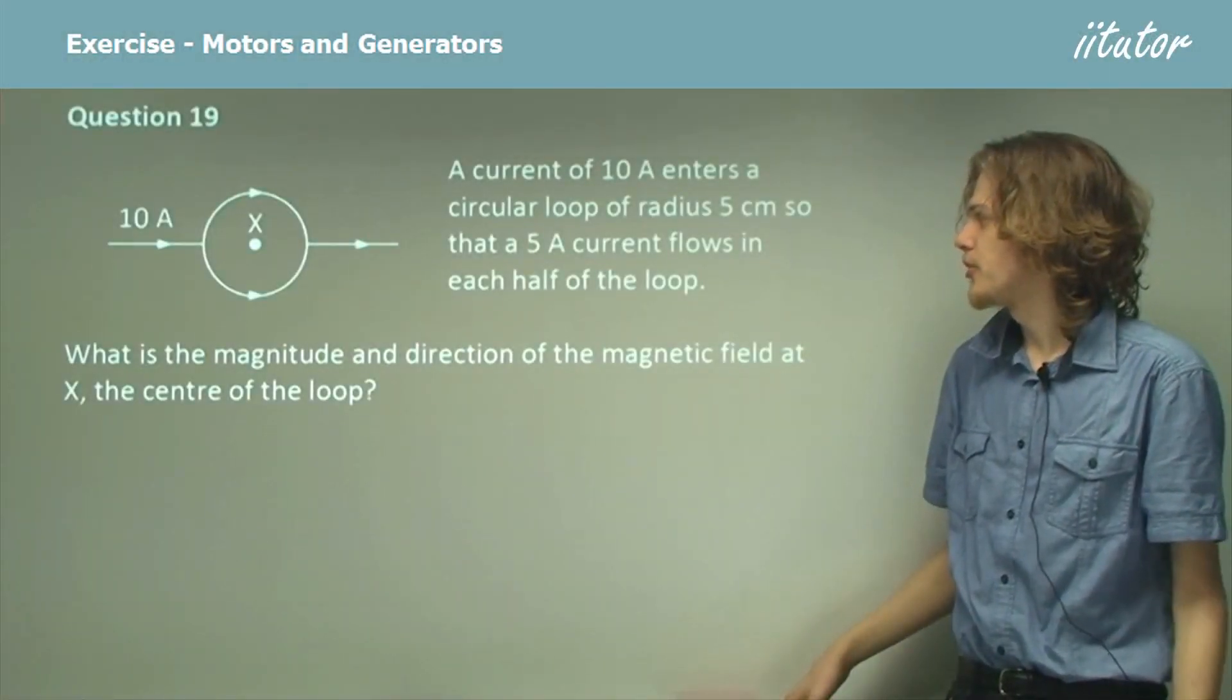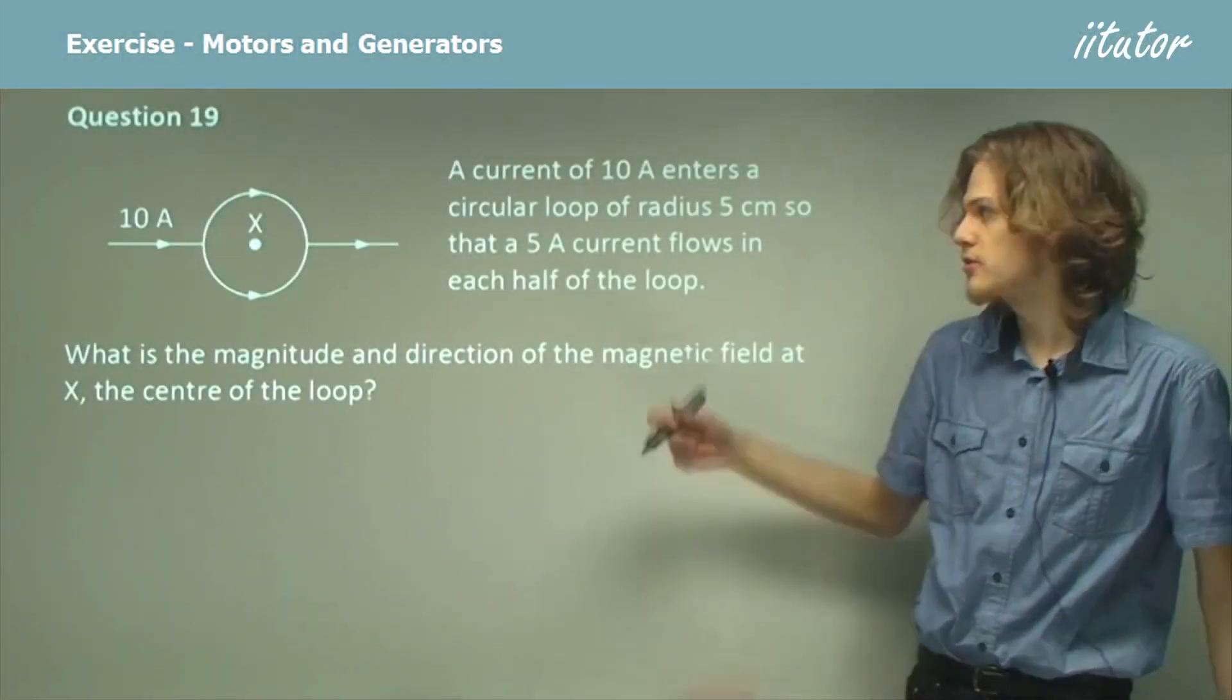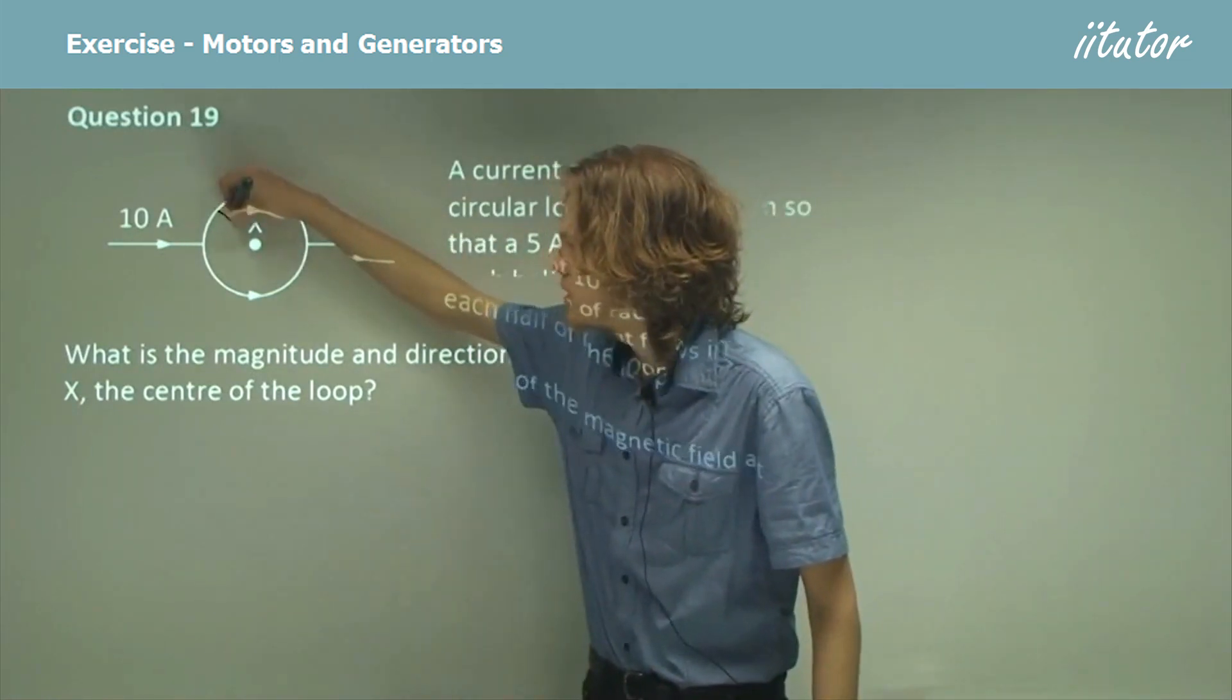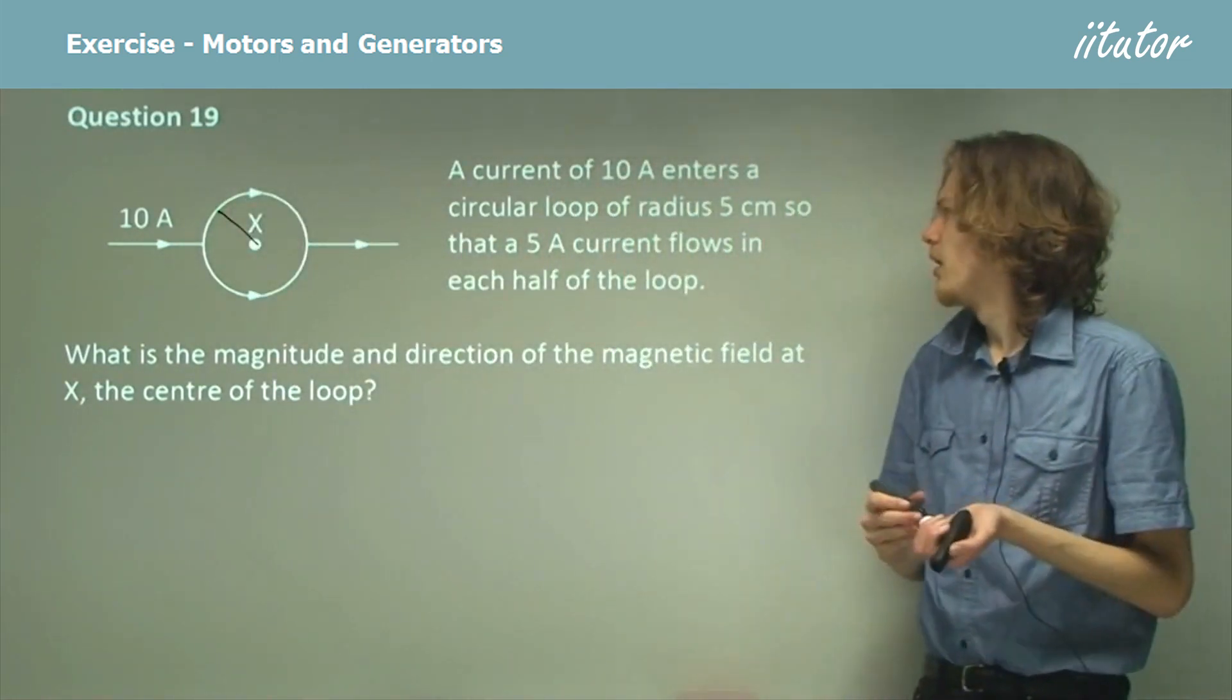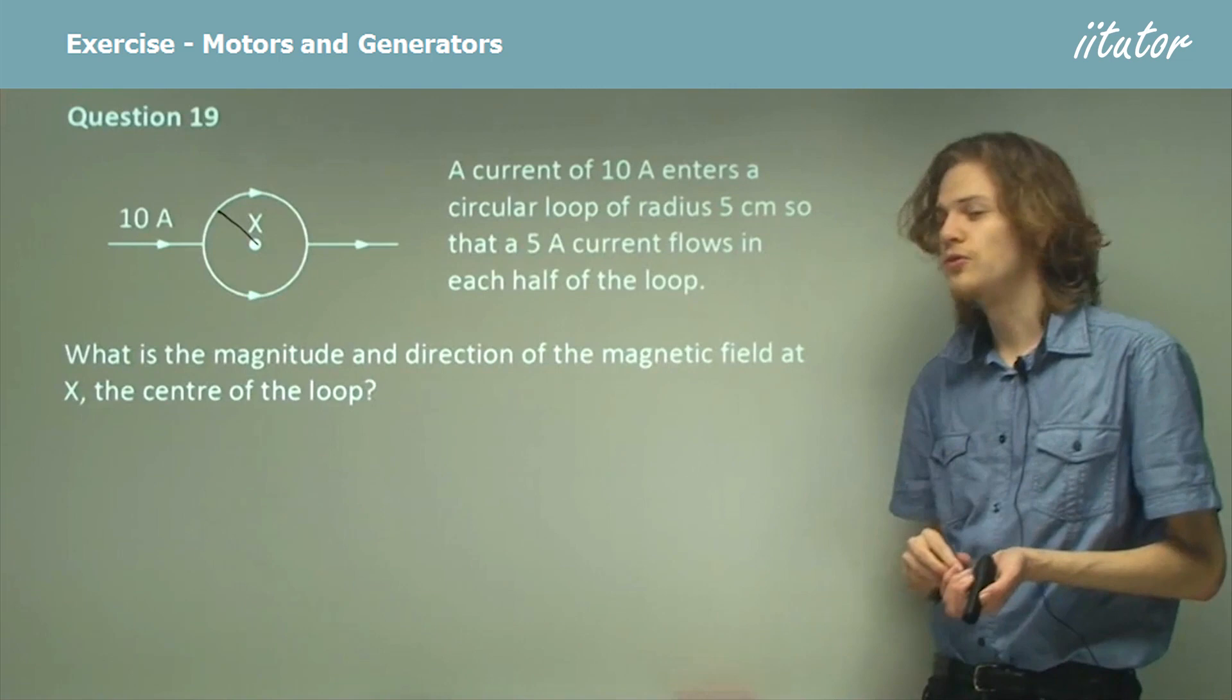A current of 10 amperes enters a circular loop of radius 5 centimeters, so this distance here will be 5 centimeters, so that a 5-ampere current flows in each half of the loop.